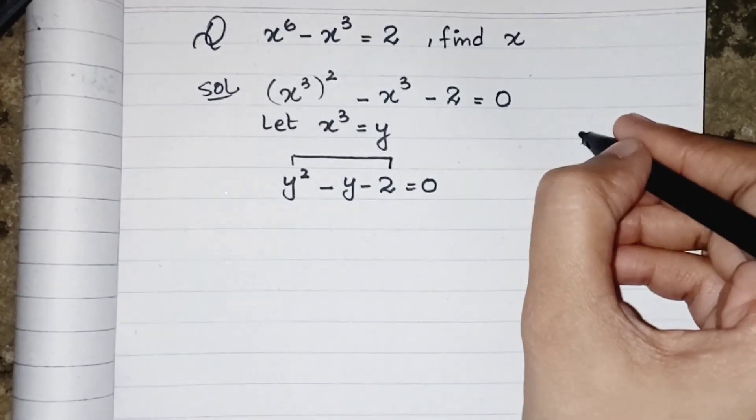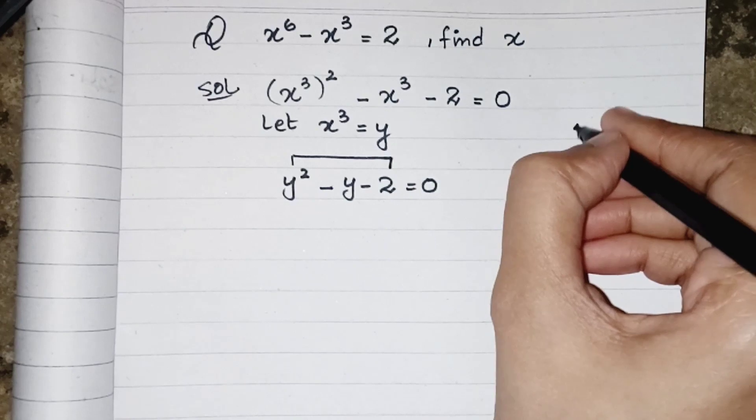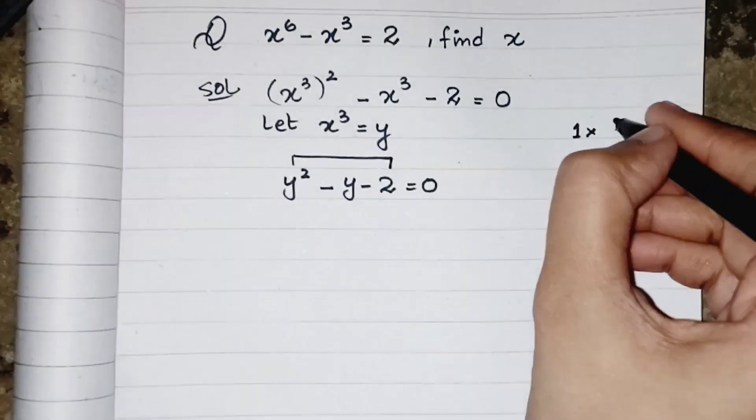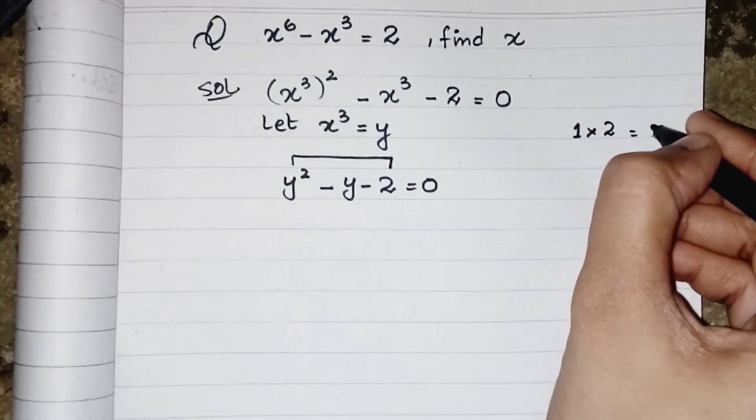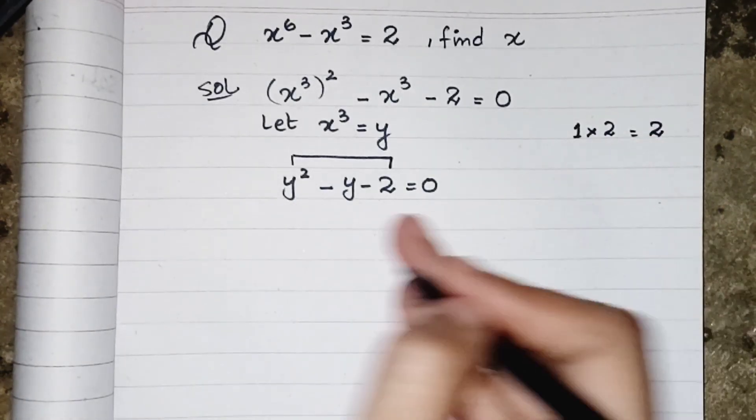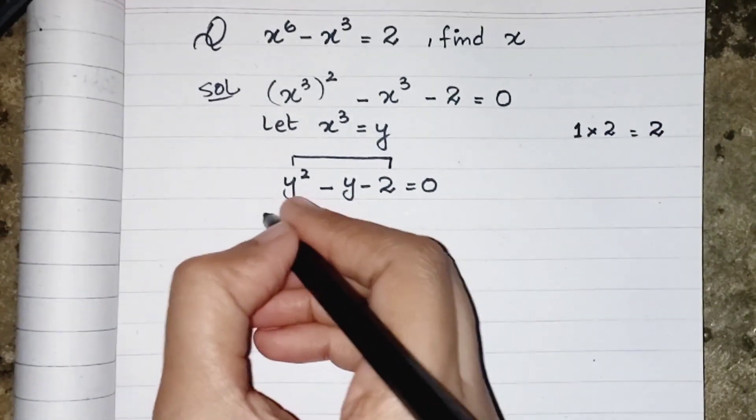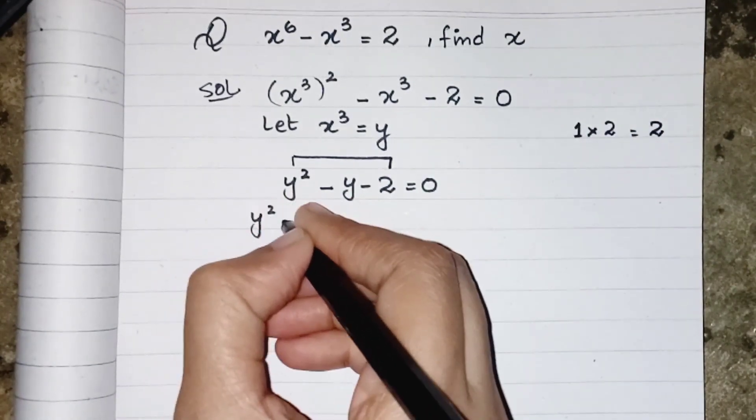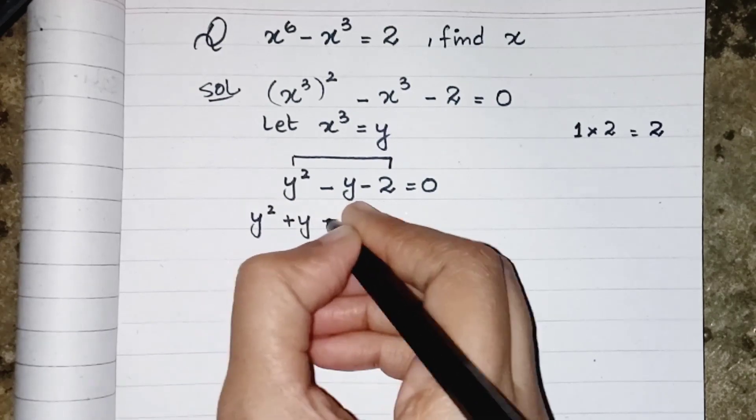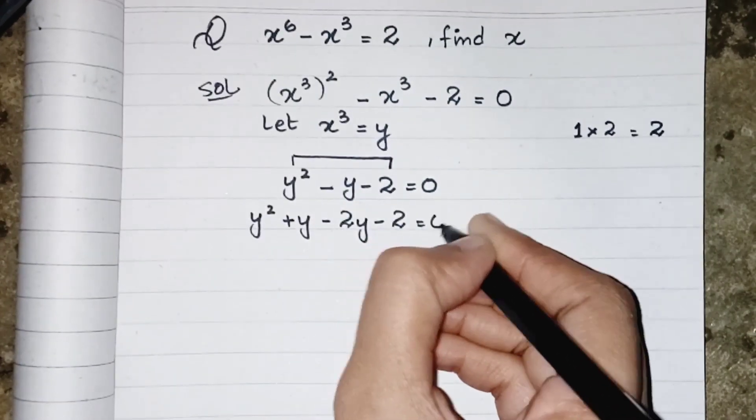Multiply the first and last terms coefficient. So over here the coefficient of y square is 1 and this one is 2. 1 and 2 multiply gives us back 2. So I have to write the factors of 2 which gives us the middle term. So I am just taking 1 and 2. y square plus y minus 2y minus 2 equals to 0.